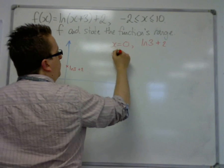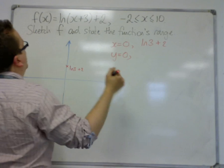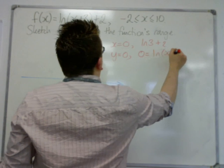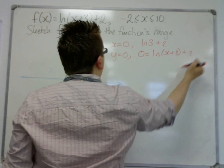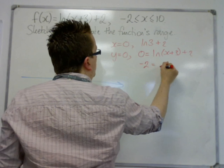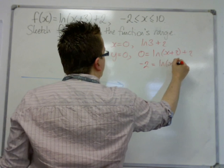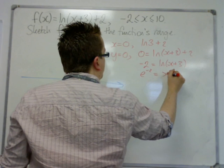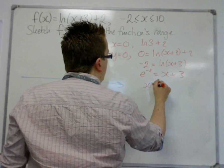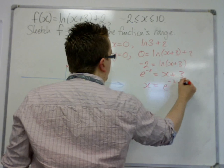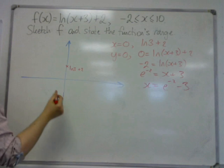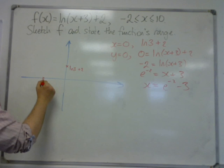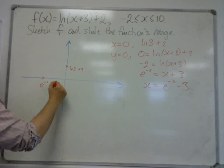And when y is 0, or when f of x is 0, we get 0 is equal to log of x plus 3 plus 2. So take 2 away from both sides. Then we can e both sides. So x is equal to e to the minus 2, take away 3, which is a negative. So it's over here somewhere, e to the minus 2 minus 3.